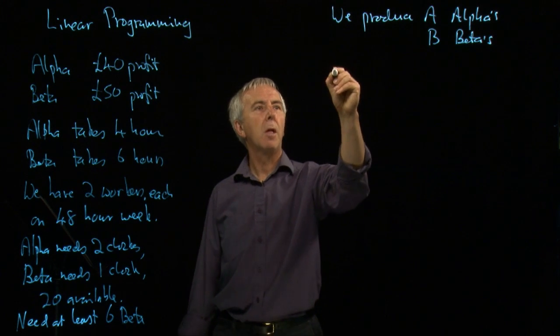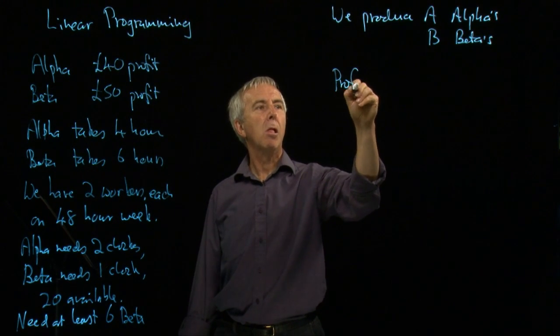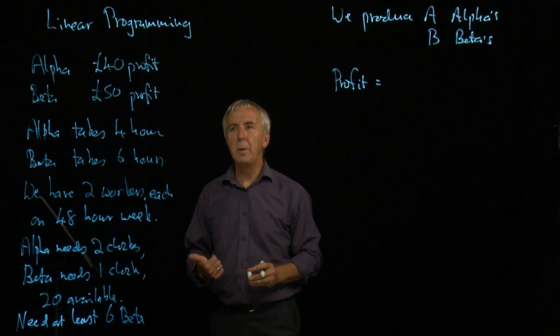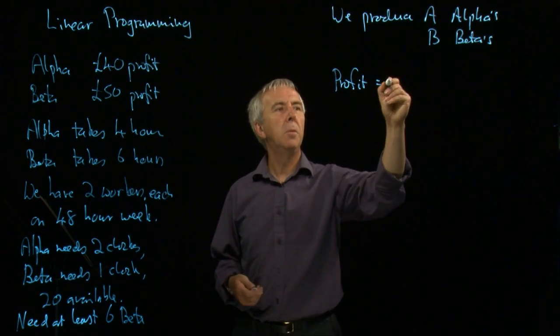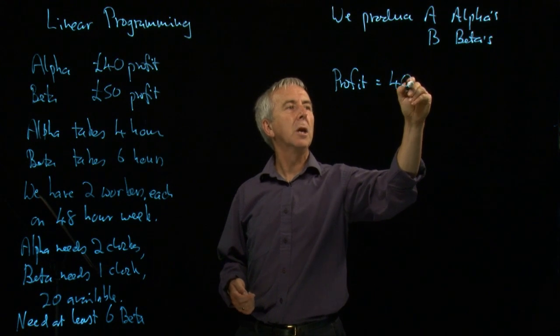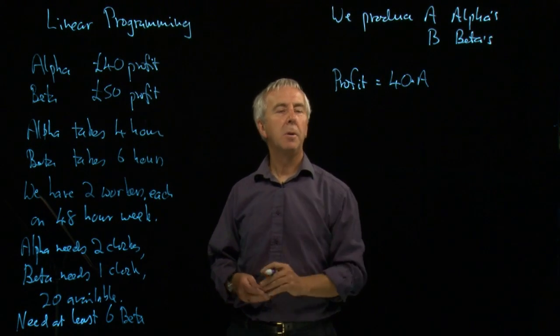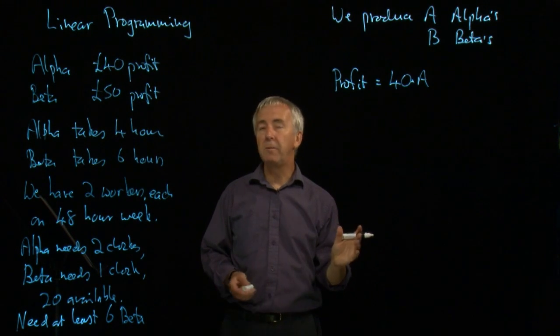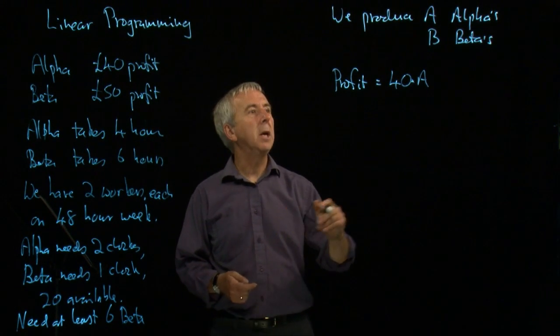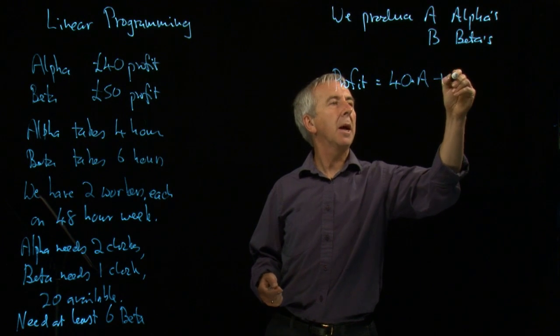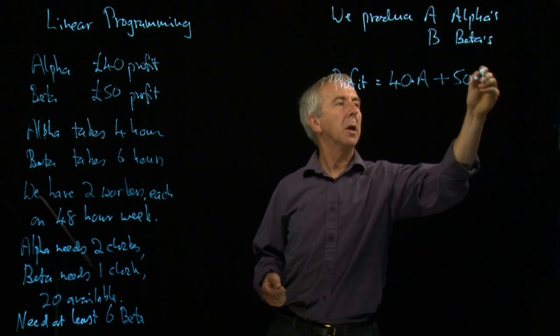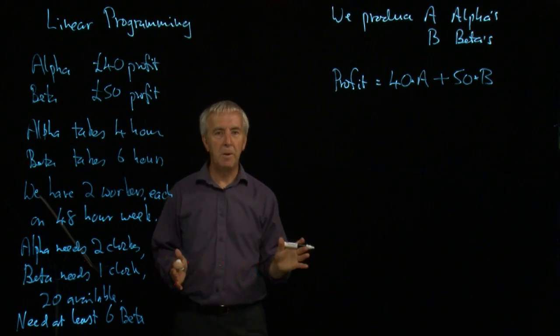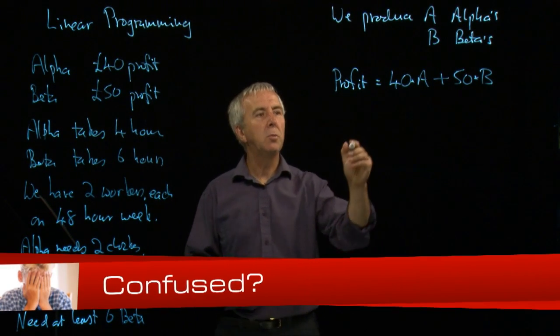So the profit we make each week. Each alpha makes 40 pounds. There are a of them. So we're going to make 40 times a from selling the alphas. And the betas make 50 pounds. And we're making b of them. And if we add that profit on, we end up with 50 times b. That's the profit function, sometimes called the objective function.